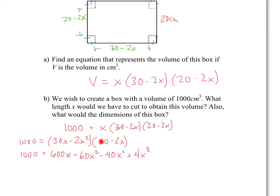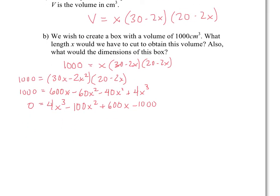The X cubed term has coefficient 4 and is positive, so I'll bring everything to one side: 0 = 4X cubed − 100X squared + 600X − 1,000. Since all coefficients are divisible by 4, I can divide the entire equation by 4 to simplify: X cubed − 25X squared + 150X − 250 = 0.